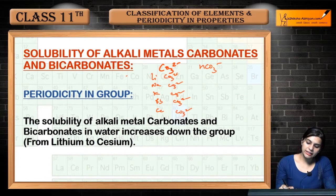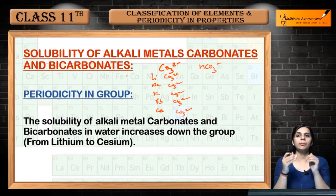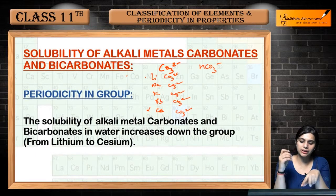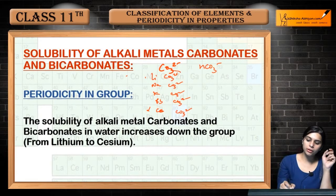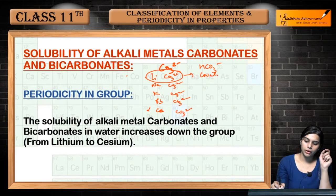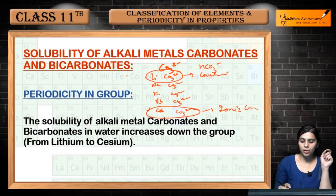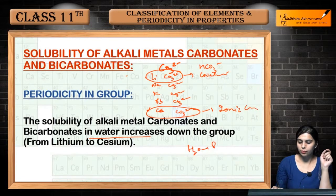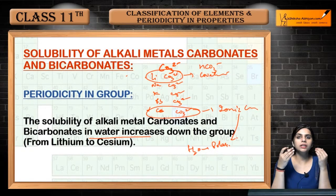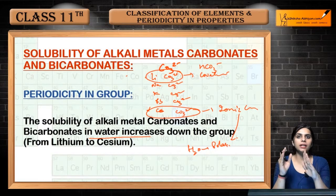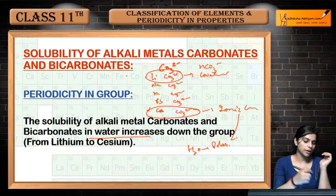Why does solubility increase? As we move down the group, we get bigger elements. Lithium is smaller in size, so it forms covalent compounds with carbonate, while the larger elements form ionic compounds. Water — H2O — is a polar compound. So like dissolves like: the more ionic and polar the compound, the more it will dissolve. Therefore, as we move down the group, solubility of carbonates and bicarbonates of alkali metals increases.